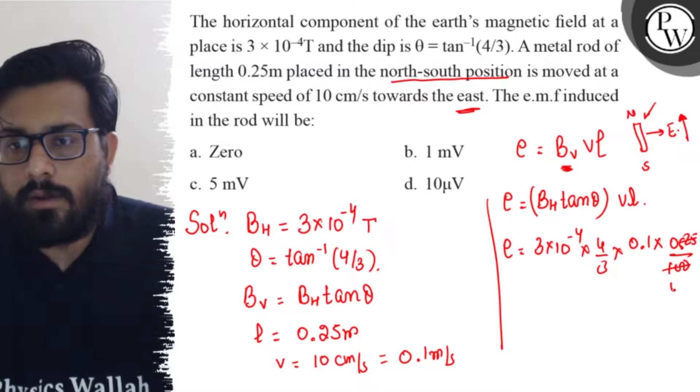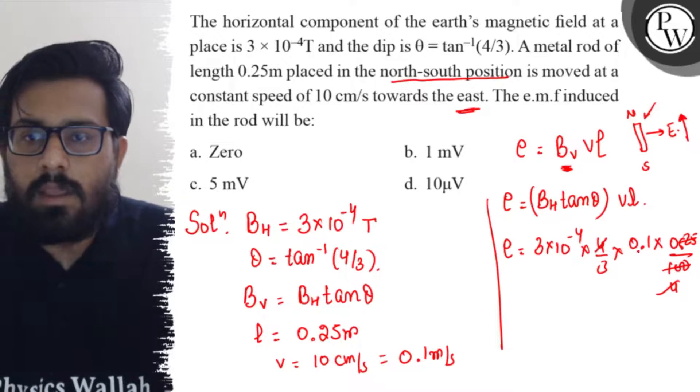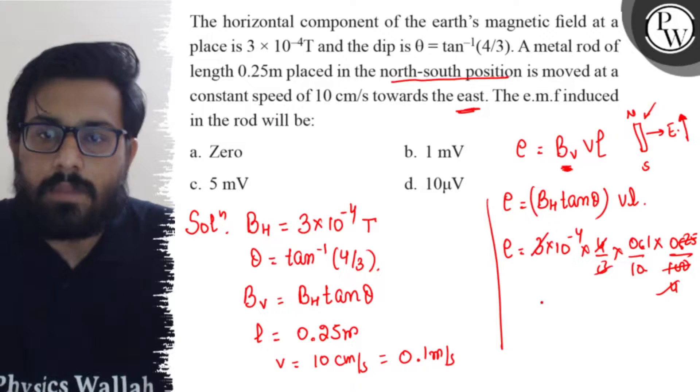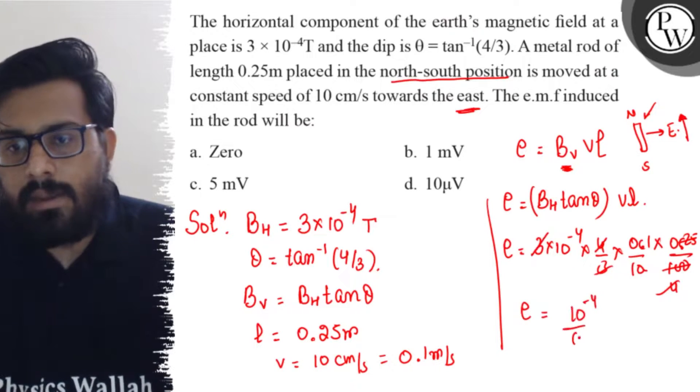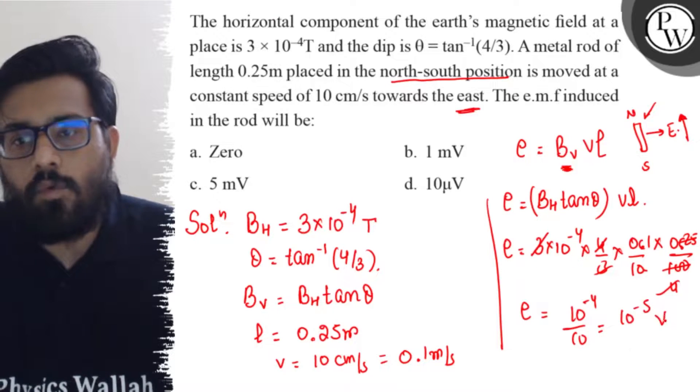So 0.1 into 0.25, 4 is 100, 4 is 4 cancel out, 3 is 3 cancel out. And this comes out to be 1 by 10. So the induced EMF comes out to be 10 to the power minus 4 by 10. This comes out to be 10 to the power minus 5 volt.